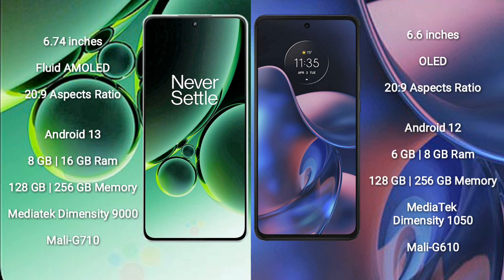OnePlus Nord 3 comes with 8GB or 16GB RAM, 128GB or 256GB internal storage, Mediatek Dimensity 9000 processor, and Mali-G710 GPU. Motorola Edge 2023 comes with 6GB or 8GB RAM, 128GB or 256GB internal storage, Mediatek Dimensity 1050 processor, and Mali-G610 GPU.